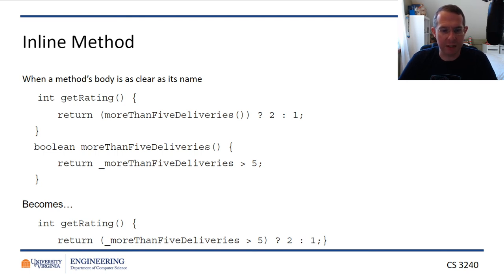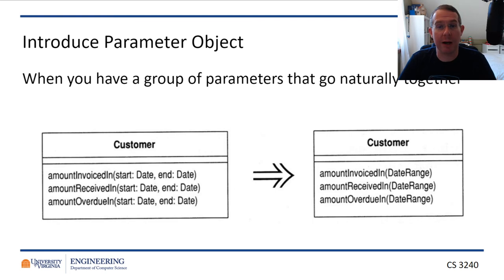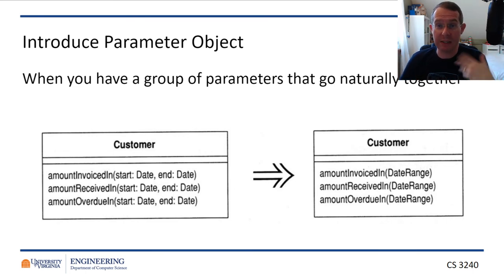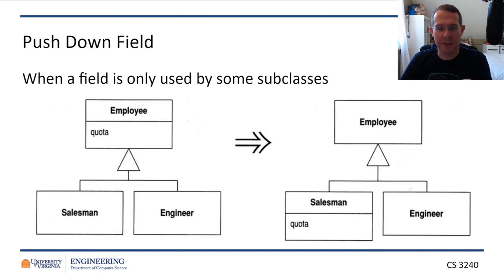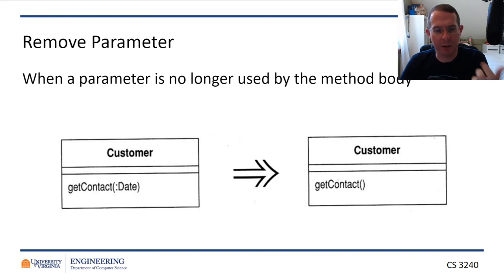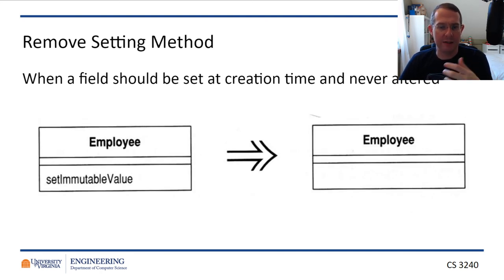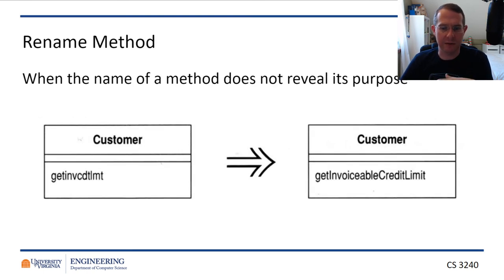Inline method is kind of the opposite — if you have a check like 'more than five deliveries,' that's really simple, so why did you make a separate function for that? That's over-extraction. Introducing the parameter object: if you have a start date and an end date, put them together in one object so you don't have to always keep track of two things at once. Pull up the field: if you see the same field in multiple subclasses and you have a superclass, put it in the superclass. Remove the parameter: if it's just today's date, why pass it — just get it inside the function. Renaming methods and variables: a cryptic function name versus a clear, readable one makes a huge difference.